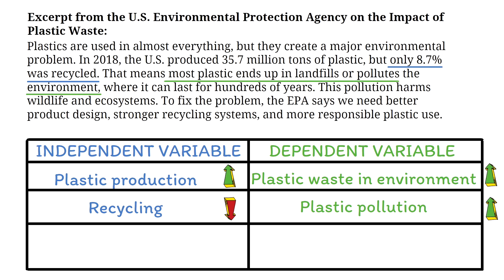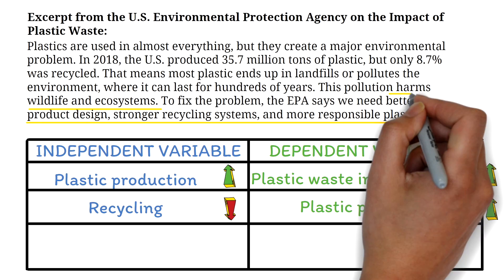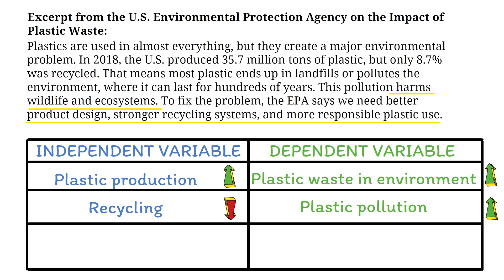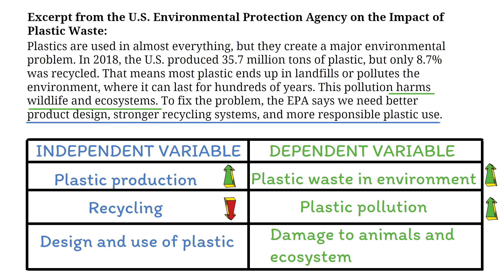Finally, the EPA is saying that if we don't change how we design and use plastic, more animals and ecosystems are going to get hurt. Here the independent variable is design and use of plastic, and the dependent variable is damage to animals and ecosystems. If the design and use of plastic decreases, then damage to animals and ecosystems increases. These relationships between each independent variable and its respective dependent variable are what we will be looking for in our answer options.